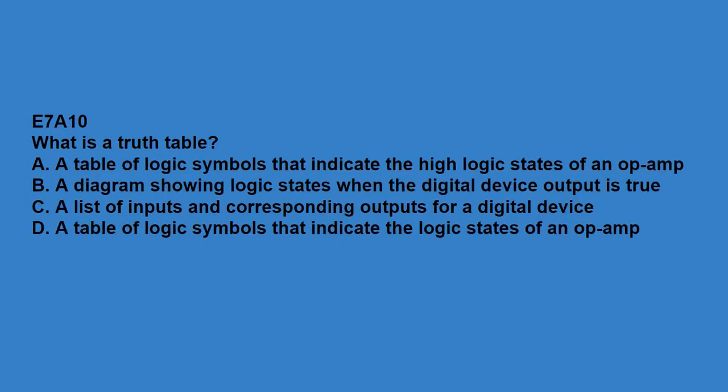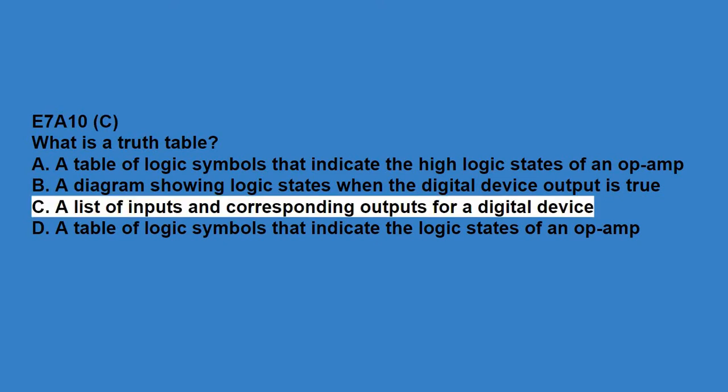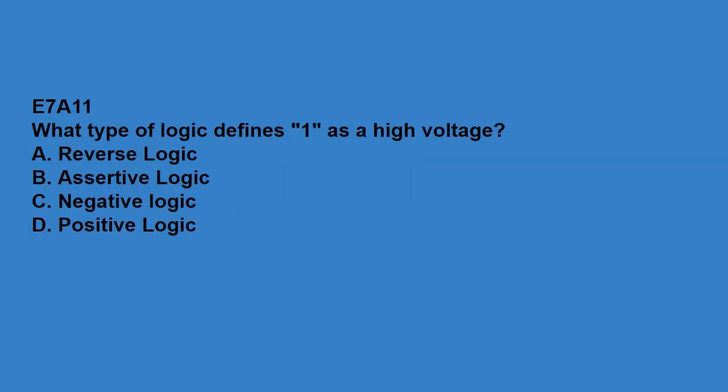E7A08, what logical operation does the OR gate perform? It produces logic one at its output if any or all inputs are logic one. E7A09, what logical operation is performed by an exclusive NOR gate? It produces logic zero at its output if only one input is logic one.